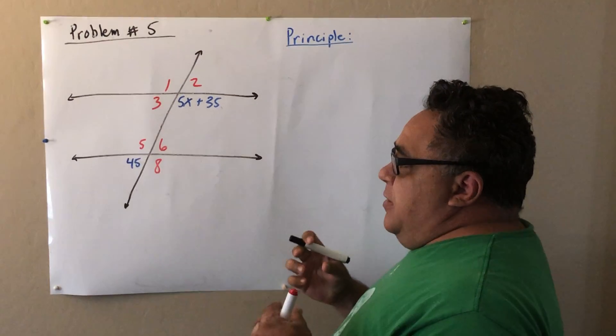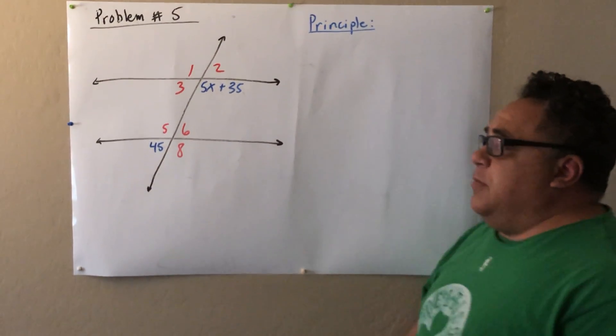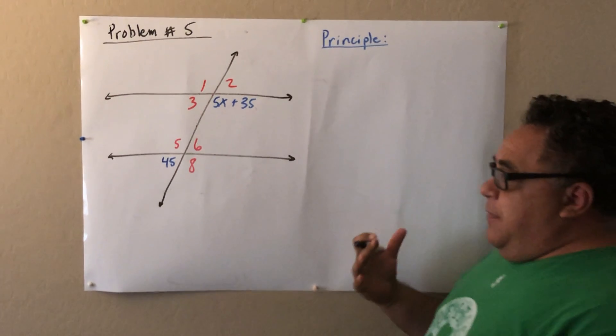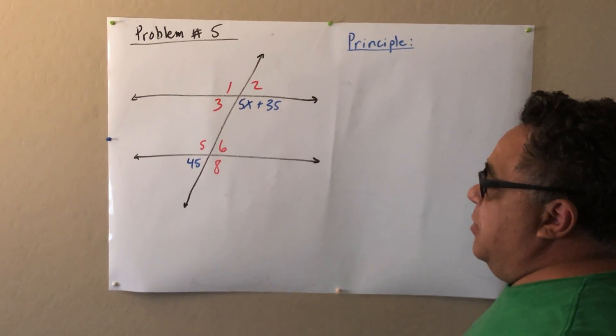I want to find a way to set those equal to each other so that I can solve for x because that's the goal here. For me to be able to set those equal to each other, I have to find some kind of relationship where the lines are congruent.